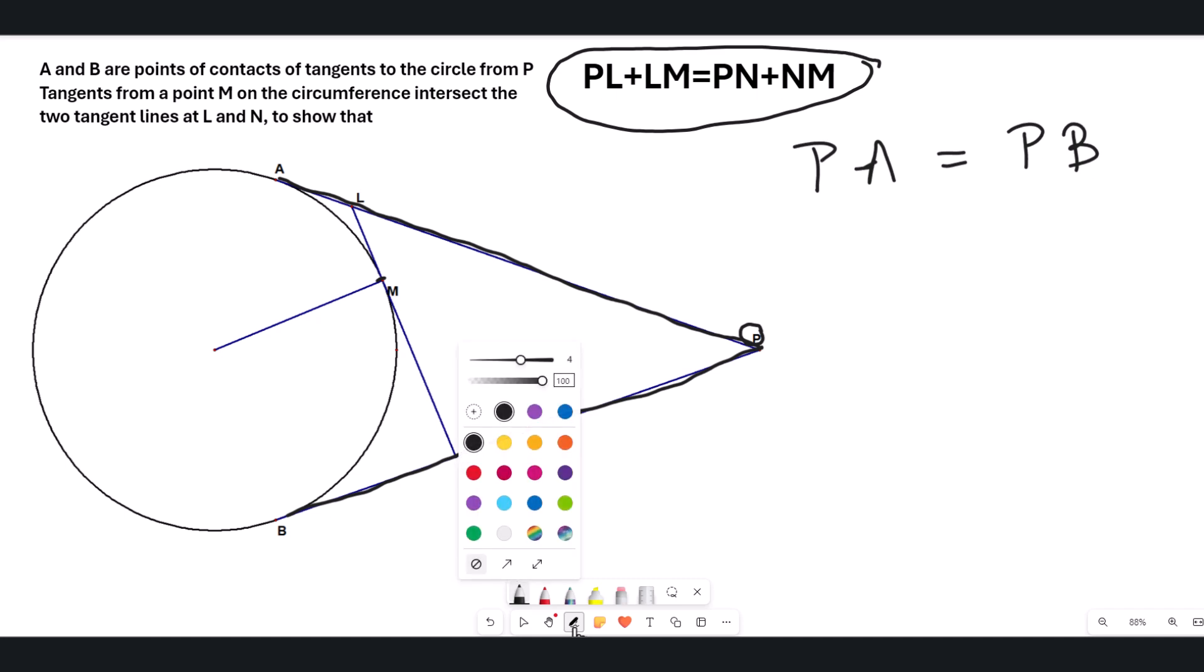Then you notice that if we look at these two, this portion here and this portion, they are tangent lines or lengths of the tangent lines from external point L. So what will that give us is that AL and LM are congruent, and that's what we are noticing here.